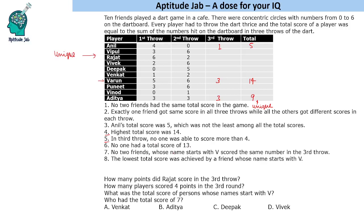No two friends whose names start with V scored the same number in the 3rd round. There are 5 such people: Vipul, Vivek, Venkat, Varun, and Vinod. Since the maximum score in this round is 4, these 5 people must have scored 0, 1, 2, 3, and 4 — all different. Since Varun already has 3, we need to fill 0, 1, 2, and 4 for the remaining four.